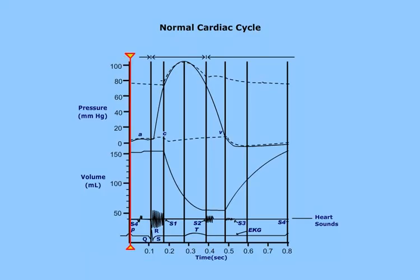This graph depicts the physical properties related to the two phases of a cardiac cycle, showing changes in pressure and volume over time, as well as how these changes relate to heart sounds and the EKG.